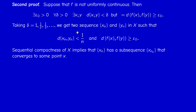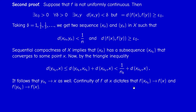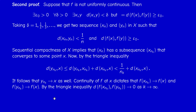Since X is compact, it is sequentially compact, so x_n has a convergent subsequence x_{n_k} converging to some point x. It follows that y_{n_k} also converges to x, because by the triangle inequality, the distance between y_{n_k} and x is at most the distance between y_{n_k} and x_{n_k} plus the distance between x_{n_k} and x. The first term is less than 1/n and the second tends to zero, so y_{n_k} → x as well. Since f is continuous, it is sequentially continuous, so f(x_{n_k}) → f(x) and f(y_{n_k}) → f(x). By the triangle inequality, the distance between f(x_{n_k}) and f(y_{n_k}) tends to zero.